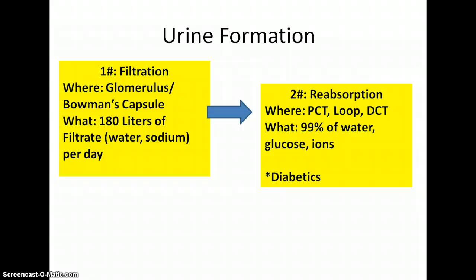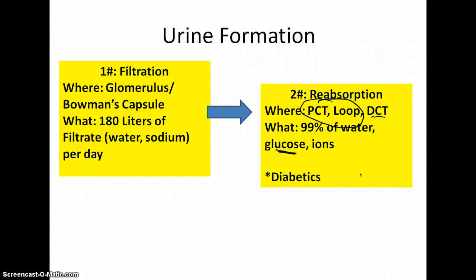Most of what gets filtered out ends up being reabsorbed, primarily from the loop of Henle and the proximal convoluted tubule, maybe a little from the distal tubule. This is also where we can see the problem with diabetics — diabetics have frequent urination and glucose in their urine because they're not doing this reabsorption step as efficiently as they should.